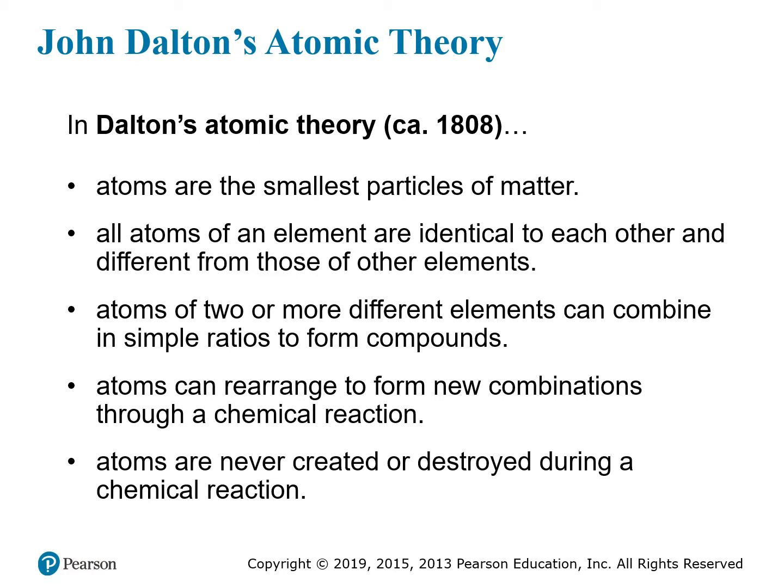Our modern atomic theory begins in the early 19th century, the early 1800s, but the idea of an atom actually goes back much farther. In ancient Greece, the philosopher Democritus believed that if you kept dividing matter into smaller and smaller pieces, eventually you would get to a point where you couldn't cut the pieces any smaller. Those pieces, which could not be cut, were called atoms — from the Greek word meaning unable to be cut or indivisible.